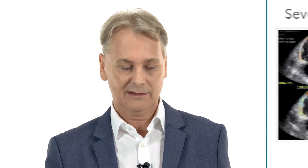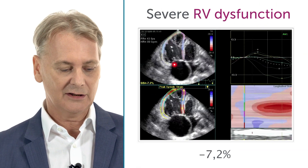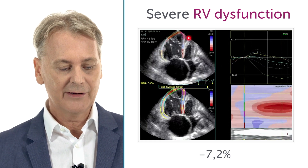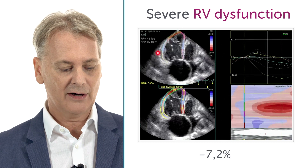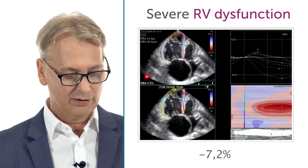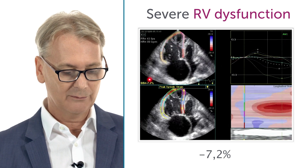The essence is that it's a parameter which is quite easy to obtain and which I have seen to be very reliable and a very good parameter for looking at longitudinal function. You can clearly see in this patient it correlates very well with what we see — very poor right ventricle function — and the global strain here is minus 7.2, far away from being normal.